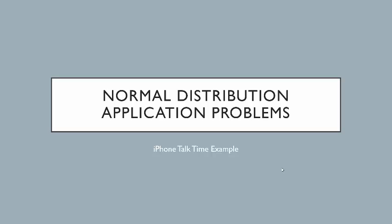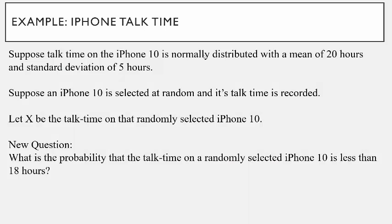Hi class. In this video I want to talk about normal distribution application problems. I've actually set this example up, or this process up, when we were talking about the iPhone talk time in a previous lecture. Suppose talk time on the iPhone X is normally distributed with a mean of 20 hours and standard deviation of 5 hours. We know the talk time is normally distributed with mean and standard deviation. We're going to select an iPhone X at random and its talk time is recorded, so we define a continuous random variable X to be the talk time on that randomly selected iPhone X.